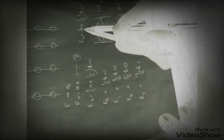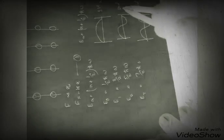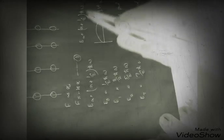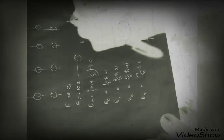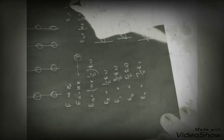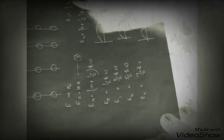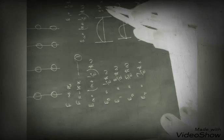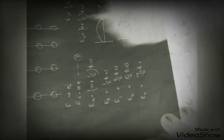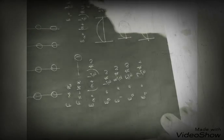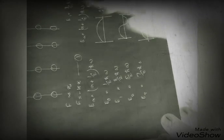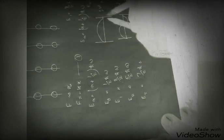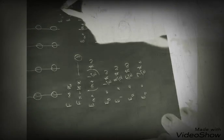N equals 1 gives the first mode, and n equals 2 gives the second mode. At the first mode, E1 equals half ħ squared omega. E1 equals 3 by 2 ħ squared omega, and E2 equals 5 by 2 ħ squared omega. E0 is equal to half ħ squared omega, which is the vibration energy.